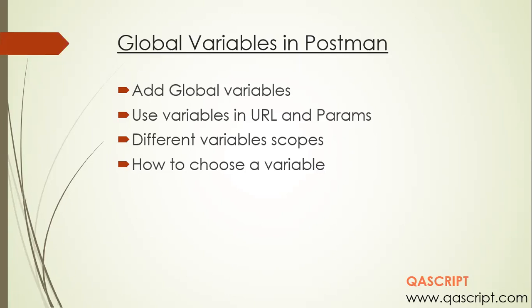We'll see how we can add global variables in Postman and how you can use those variables in different places like your request URL or in your parameters. We will have a brief look at what are the different variable scopes available in Postman, although we will not be going into detail in this video — we'll look at each scope separately later. And then we'll also discuss how you can choose a variable scope depending on your situation.